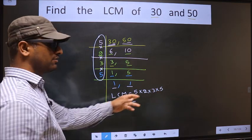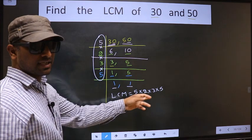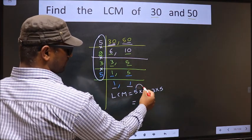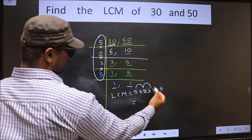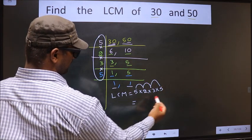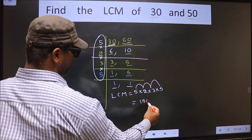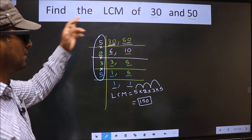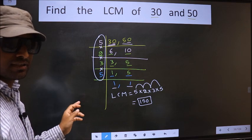So now let us multiply these numbers, that is 5 into 2, 10, into 3, 30, into 5, 150. So, 150 is our LCM. Am I clear?